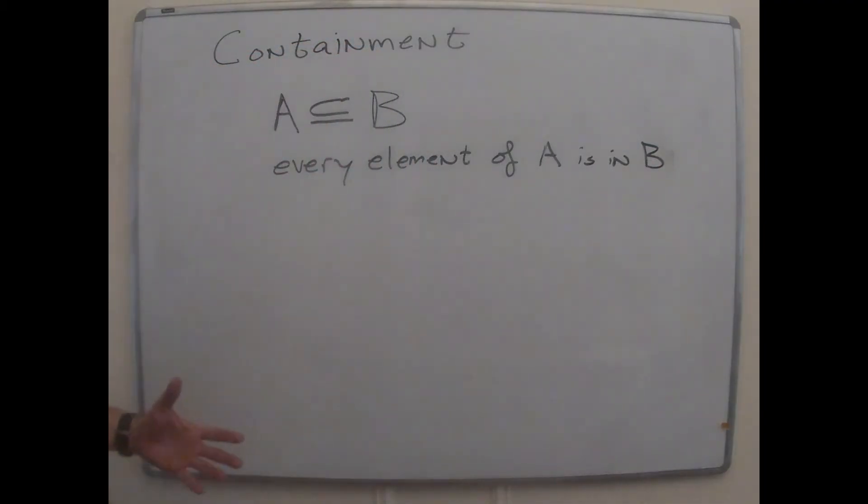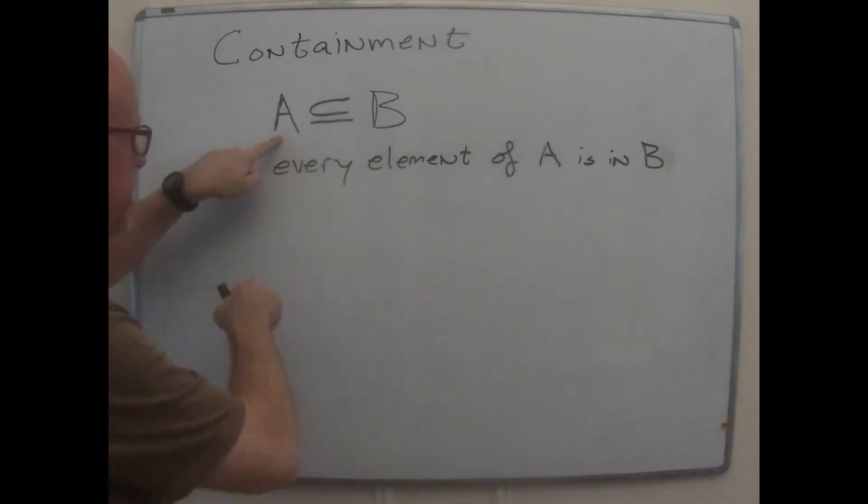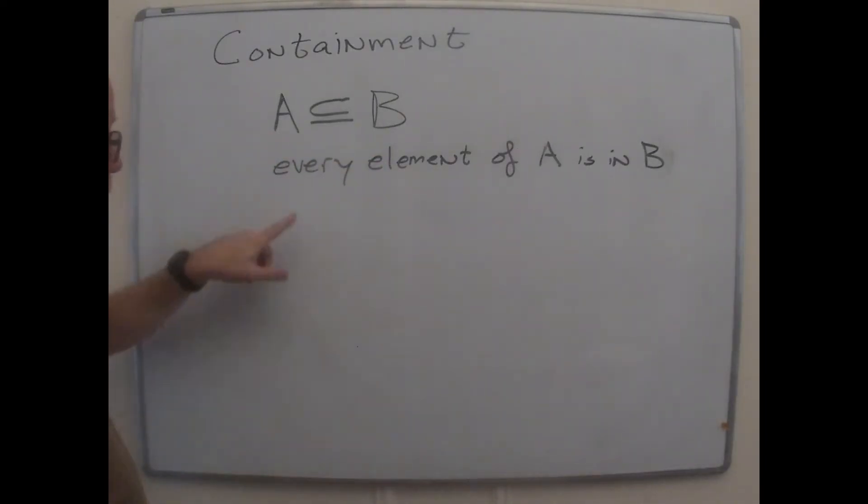Every element of A is in B. So to check that one set is contained in another, you take this guy's elements, list them all out, and then one by one you go through them and see, are they in there? Yes? Yes? Yes? No? Okay, they're not contained. If you've got to get yes on every single element of A.